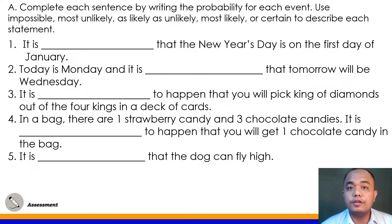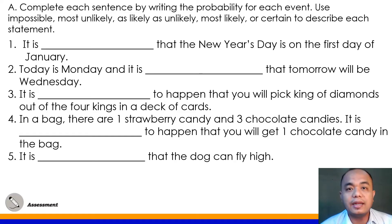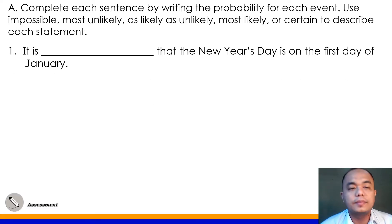Let's answer first Part A of your assessment of your Module 6 Lesson 1. Direction: complete each sentence by writing the probability of each event. Use impossible, most unlikely, as likely as unlikely, most likely, or certain to describe each statement.